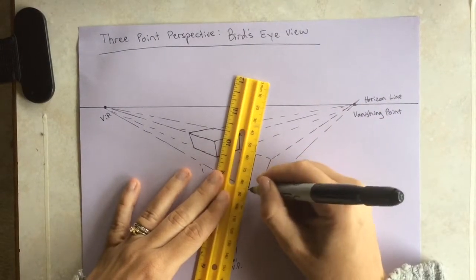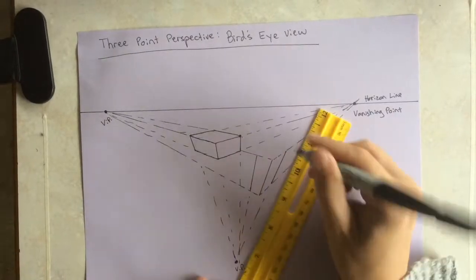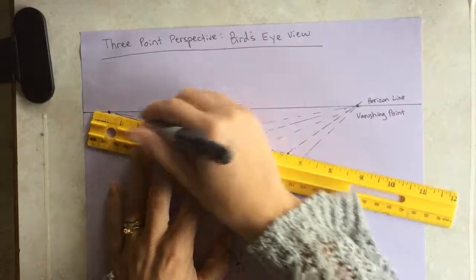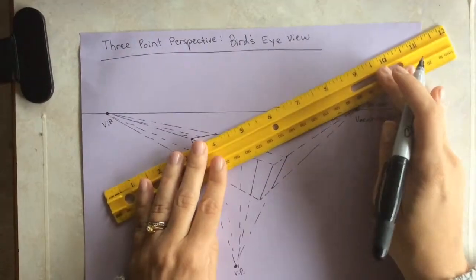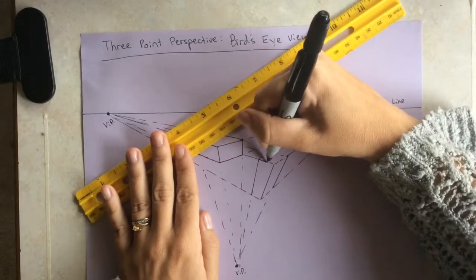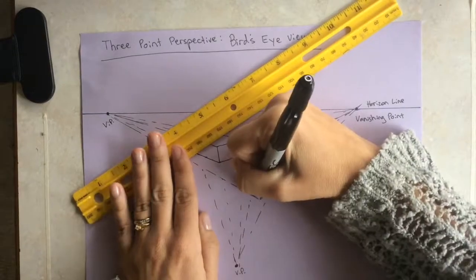Then you want to take the width and connect those to the bottom vanishing point. However far apart you make these will be how big your box appears. Then you want to play connect the dots and connect opposite lines to opposite vanishing points. That's the best thing to remember is those opposites. Fill in the blanks, connect the dots, and you're done with the box.